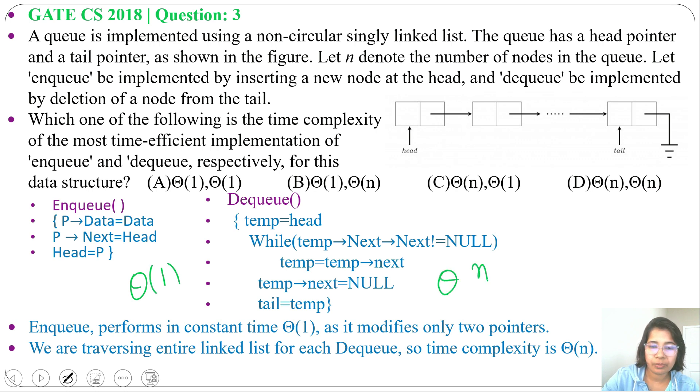Now check the option in which option is present. It's present in option B. So answer will be option B, theta of 1 and theta of n for enqueue and dequeue.